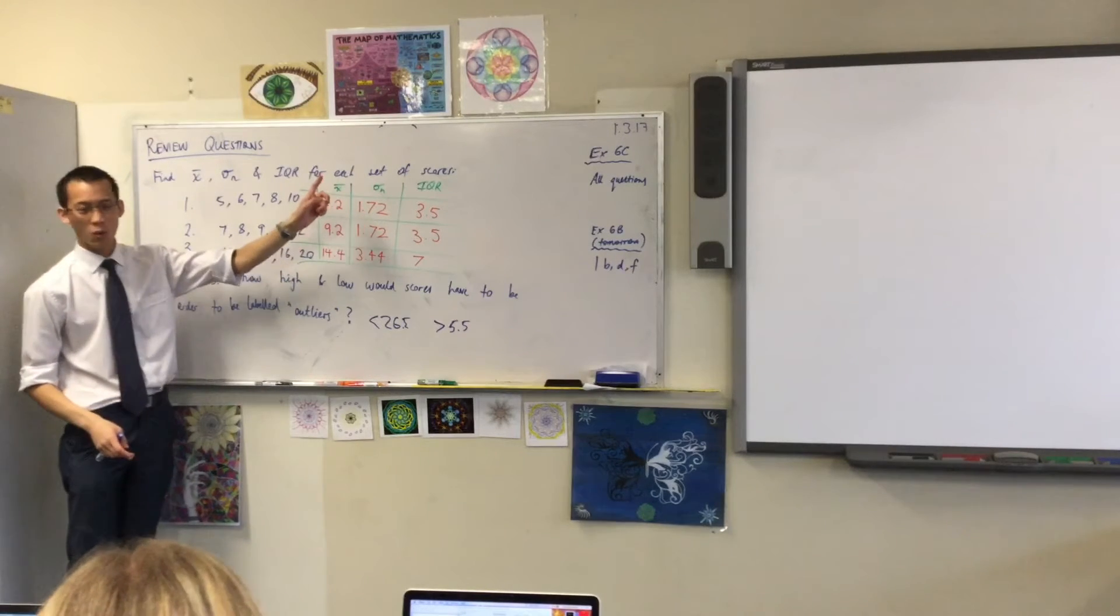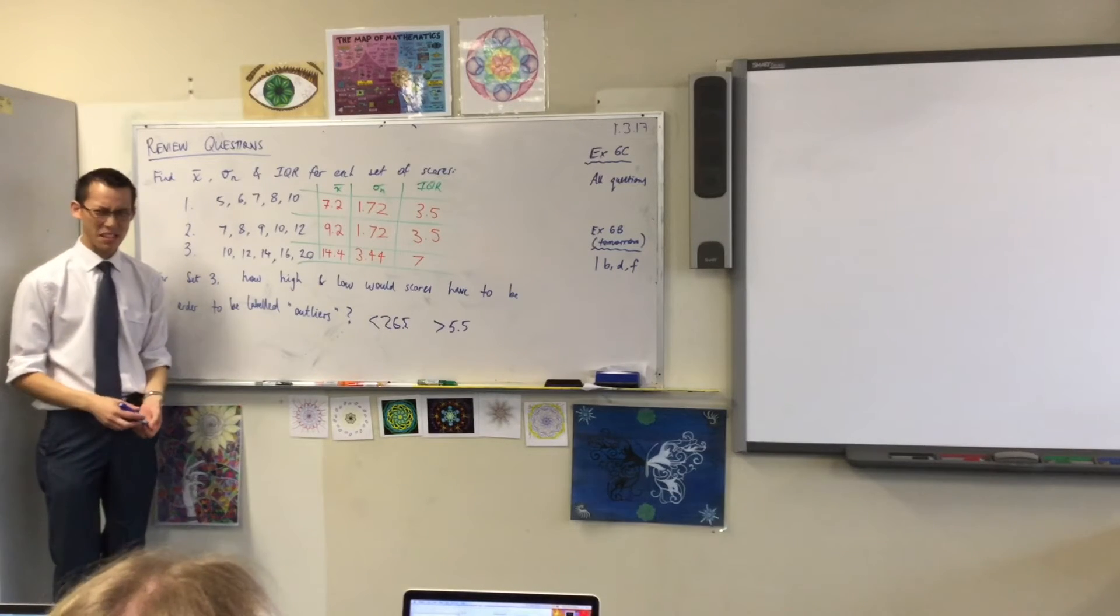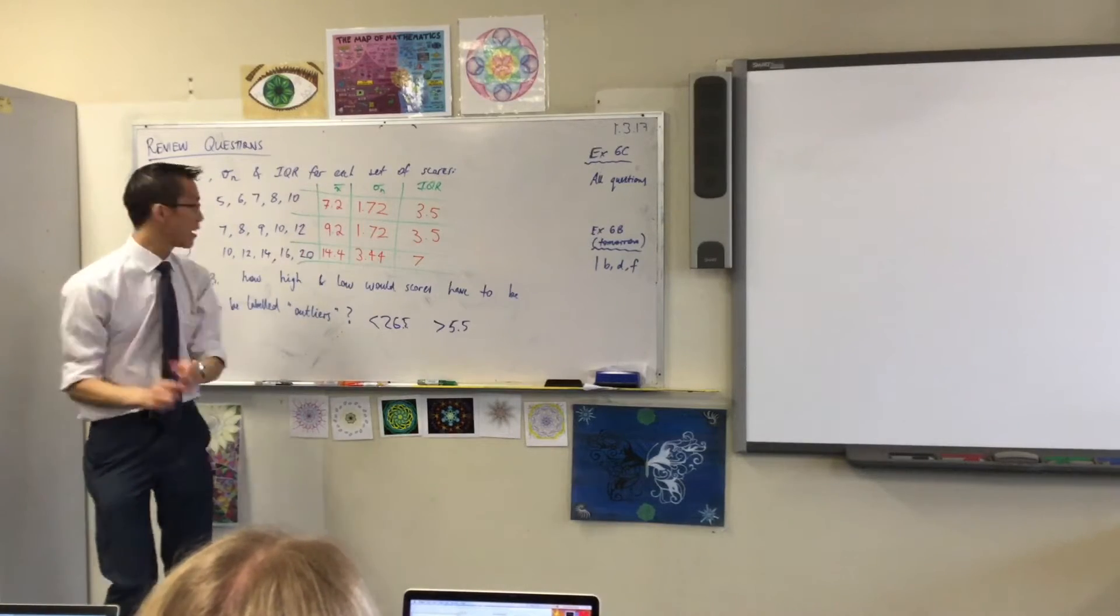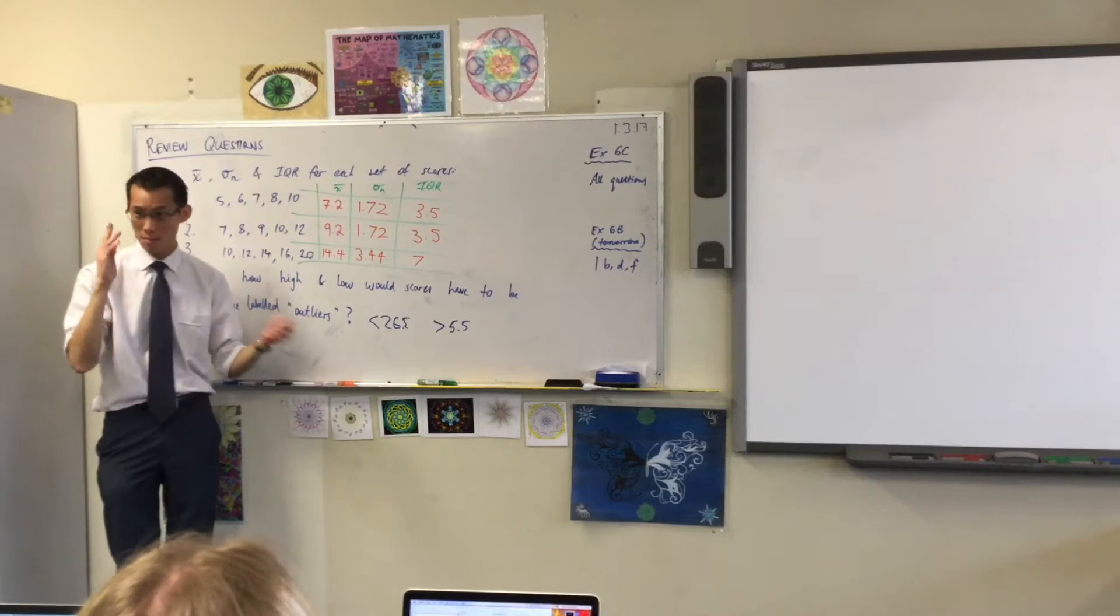If you go over to the interquartile range though, it's kind of similar but kind of not. Do you notice the interquartile range? You need Q1 and Q3 for that, right? Now I think it's easy when you have a look at this to see what Q2 is, the median.